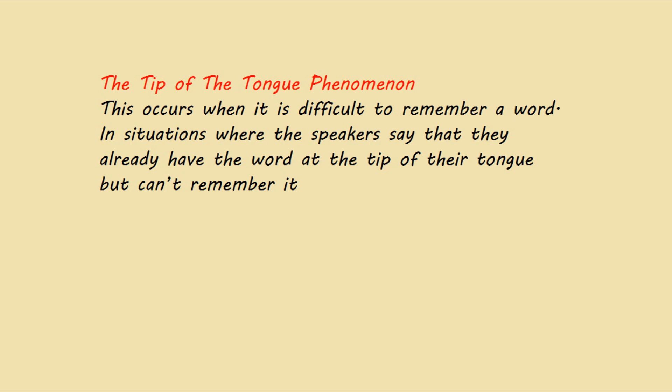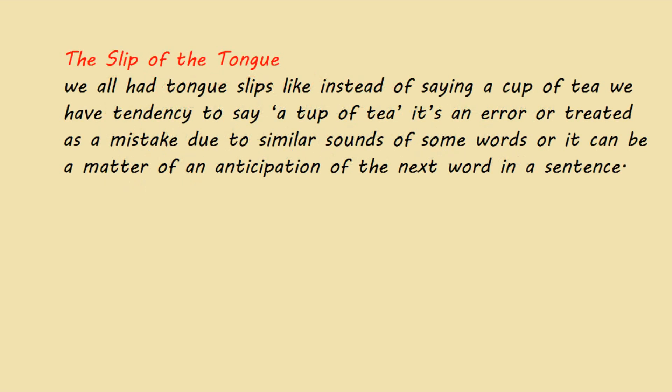The slip of the tongue is when we accidentally say the wrong word — like instead of saying 'a cup of tea,' we say 'a top of tea.' This is an error due to similar sounds of some words, or it's a matter of anticipation of the next word. For example, if you're about to say 'a cup of tea,' your brain is already thinking about the word 'tea,' so the word before it may not be pronounced properly.